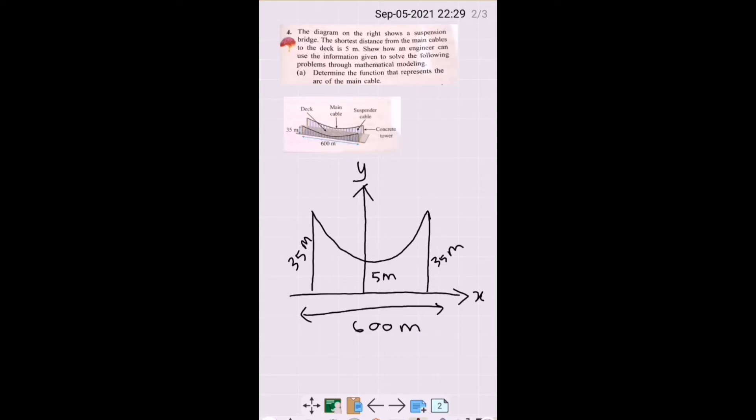So first, we draw a diagram to help us visualize better. This is the concrete tower which is 35 meters, over here is also 35 meters. We have the bridge which is 600 meters and in the middle here we have the shortest distance from the main cables to the deck which is 5 meters.